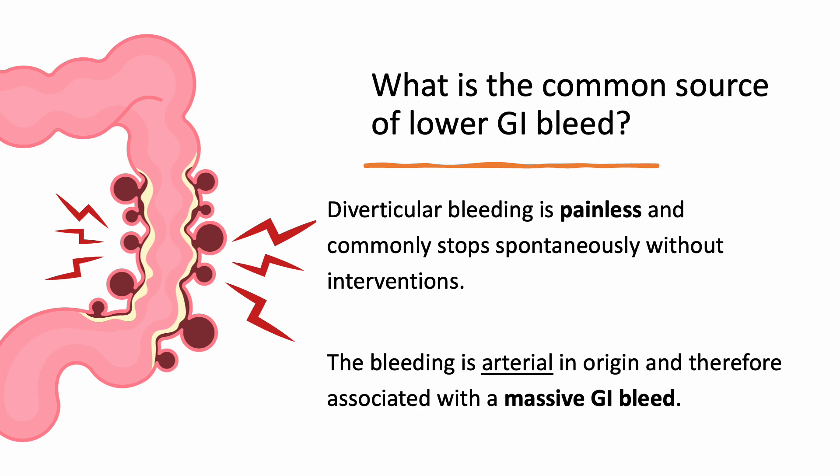What is the most common source of a lower GI bleed? It's diverticulosis causing a diverticular bleed. Diverticular bleeding is painless and commonly stops spontaneously without any type of intervention. The bleeding is arterial in origin, therefore it is associated with a massive GI bleed.